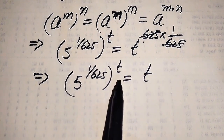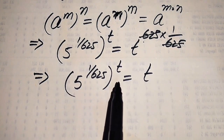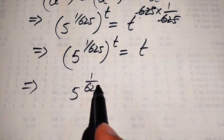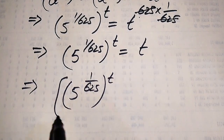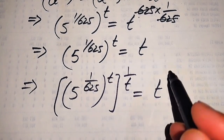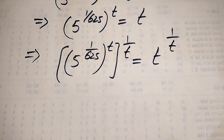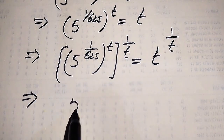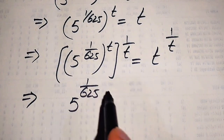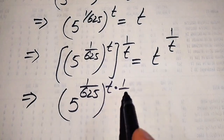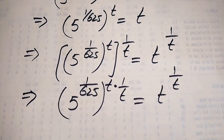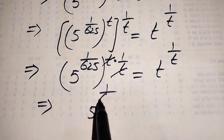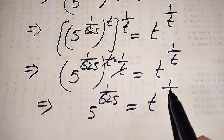Now we need to move this variable term to the right hand side. To do so, we take the t-th root on both sides, or in other words take 1 over t power on both sides. After applying this, using the exponential rule we multiply the exponents: 5 to the power of 1 over 625, with whole exponent t times 1 over t, equals t to the power of 1 over t. The t cancels, giving us 5 to the power of 1 over 625 equals t to the power of 1 over t.